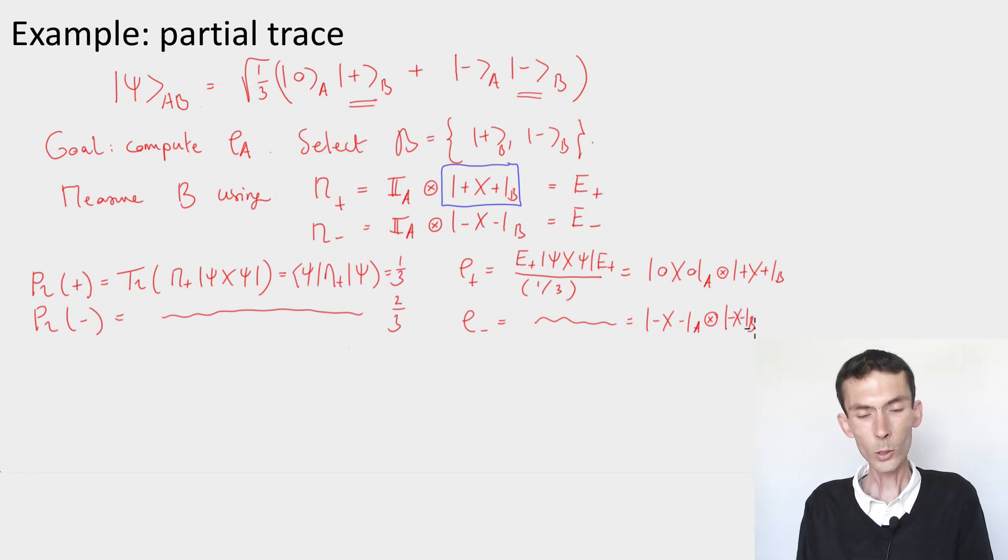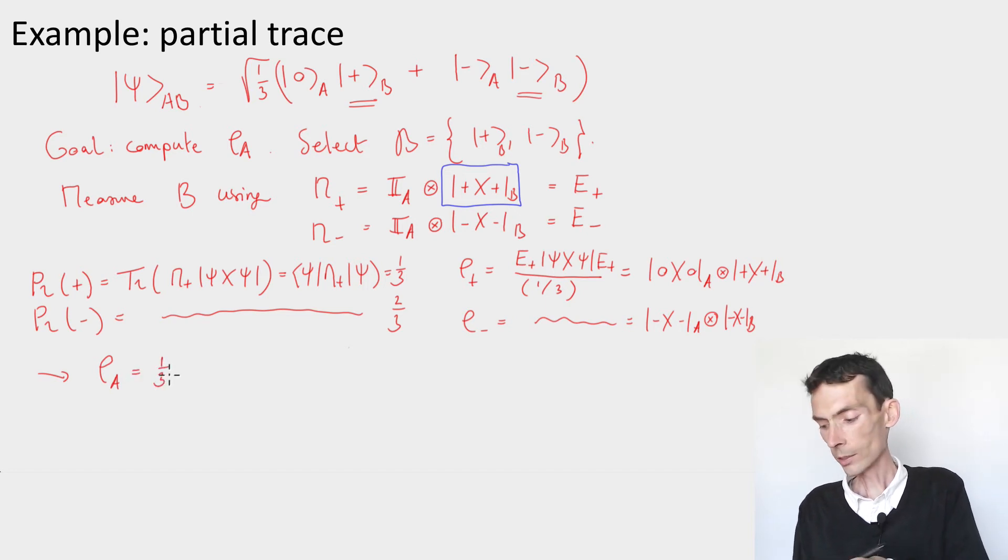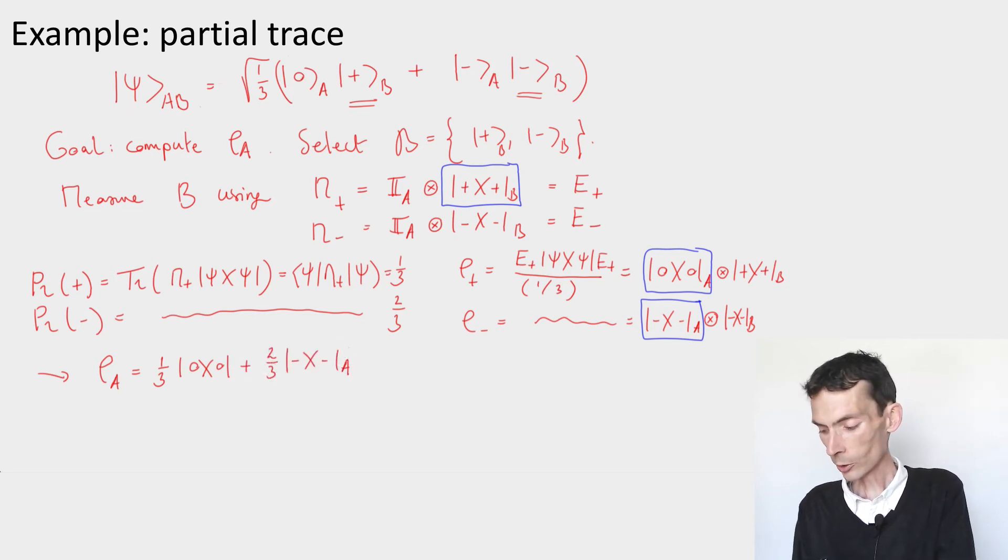Now here we are, we have our two post-measurement states. And that tells us what the reduced density on A should be. The conclusion is that rho A should be, with probability one-third, we get the reduced density on A that we had when we obtained the outcome plus. And with probability two-thirds, we'll get the reduced density on A that we got when the outcome was minus. So this gives us a third times zero zero plus two-thirds minus minus. So that's the reduced density on A, it's the final answer to our problem.